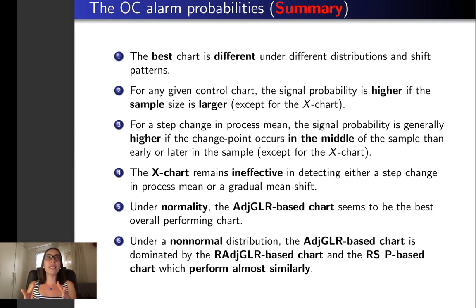We observed that the Shewhart X-chart remains ineffective in all considered cases even under normal distribution. In this later case the adjusted GLR chart seems to be the best overall performing chart whereas under a non-normal process the r-adjusted GLR and RSP techniques perform almost similarly and are viable non-parametric alternatives for phase one analysis.